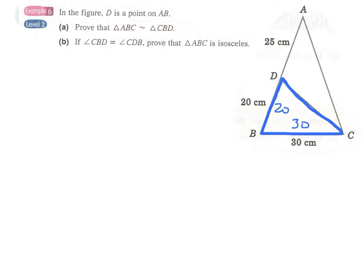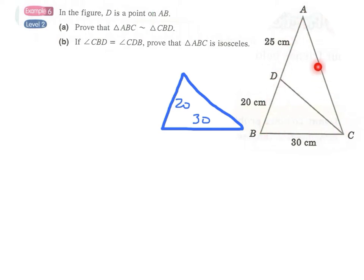Suppose we draw another blue triangle on top of CDB and then move it away to see if the size of this blue triangle is proportional to the bigger one. We have 20 to 45 and 30 to 30, and it seems the ratios are not appropriate.